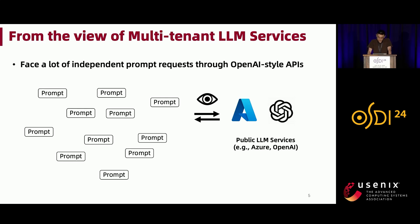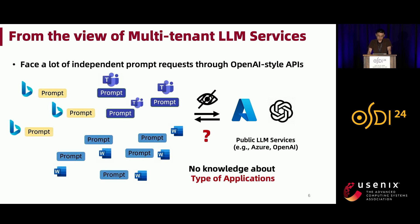Although LLM applications use multiple requests, existing public LLM service providers still provide single request-centric APIs. From their view, they just receive a lot of individual prompt requests without knowing any application-level knowledge. They don't know whether requests are coming from the same application, the type of application, or the dependency between prompt requests.